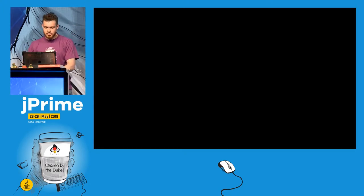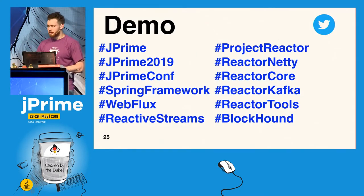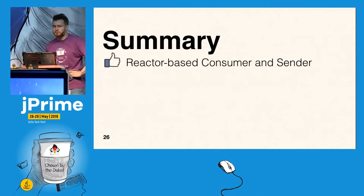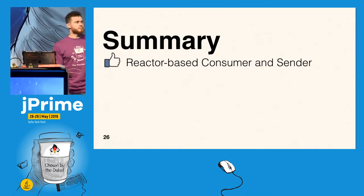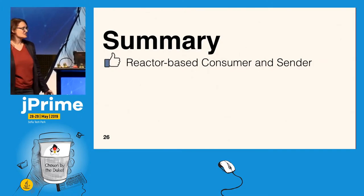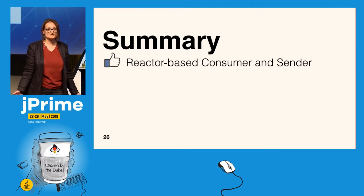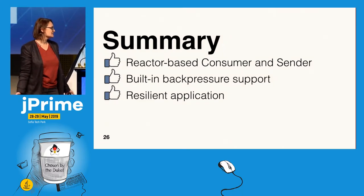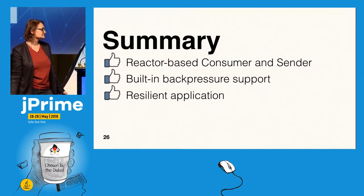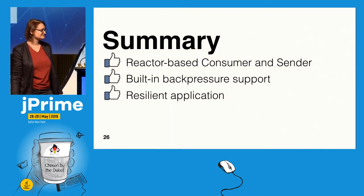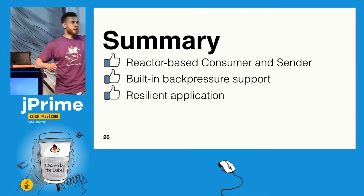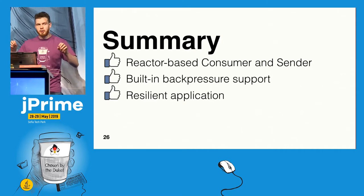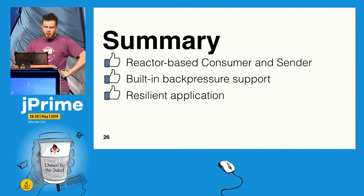Let's go back to our UI and verify it works. Messages are coming in — lots of messages. It works. Now for a quick summary: we can use Kafka with the Reactive Streams API, it's easier to consume and send messages, there is backpressure support, and we have a resilient application. You can check the source code to verify that backpressure works properly.